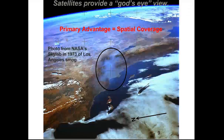The primary advantage of satellite data is spatial coverage. Surface data from air quality networks in the US, Europe, or elsewhere are very sparse and only in a few locations — they don't give you the big picture. Satellites provide a god's-eye view of air pollution. This photograph, taken by an astronaut on NASA Skylab in 1973, shows the city of Los Angeles and the thick layer of pollution that plagued the city at that time. Since then air quality has improved quite dramatically in the US.